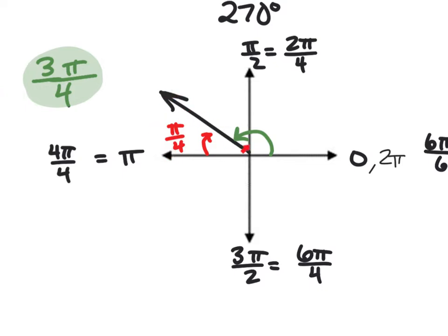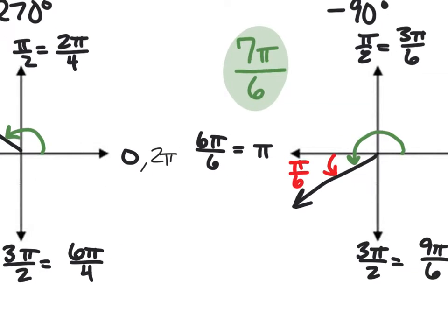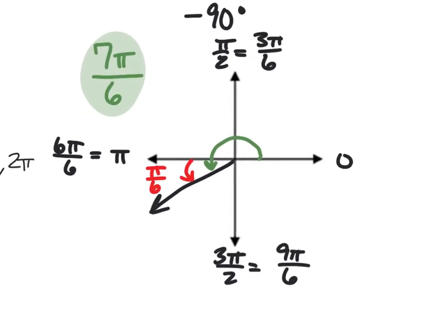That remaining distance will become our reference angle later, so it's super important to find every time. For 7π/6, convert all axis measurements to denominator 6: 0, 3π/6, 6π/6, and 9π/6. Since 7π/6 is just 1π/6 more than 6π/6 — that's 1π/6 more than 180 degrees — this angle lands in quadrant 3 with π/6 as the reference.